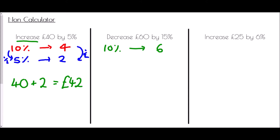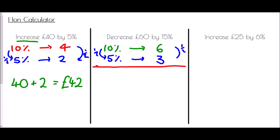Because this is 15%, I also need 5%. I halve 10% to get 5%, so half of £6 is £3. Then I add those together: 10% plus 5% is 15%, and £6 plus £3 is £9. Since it was a decrease — meaning to take away — it's £60 minus £9, which is £51.